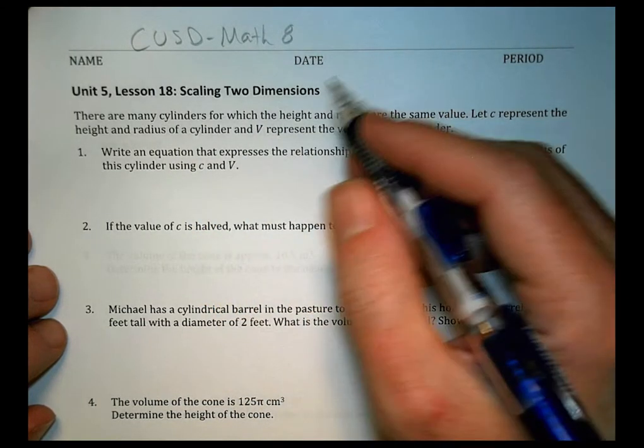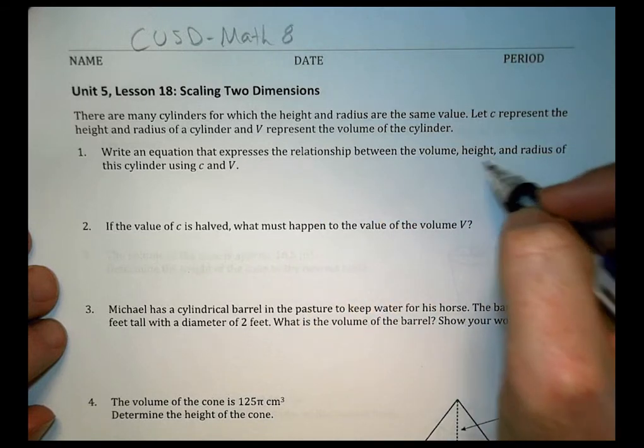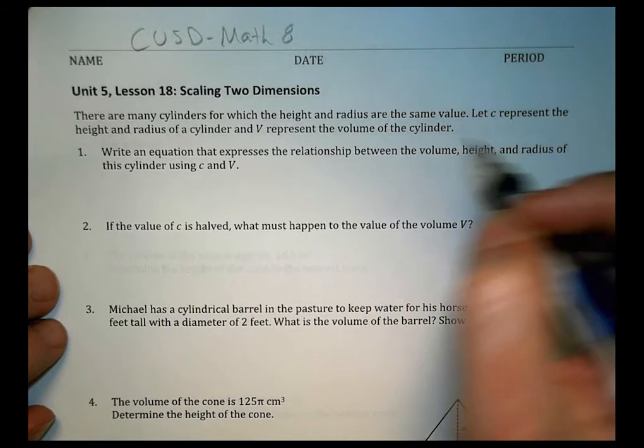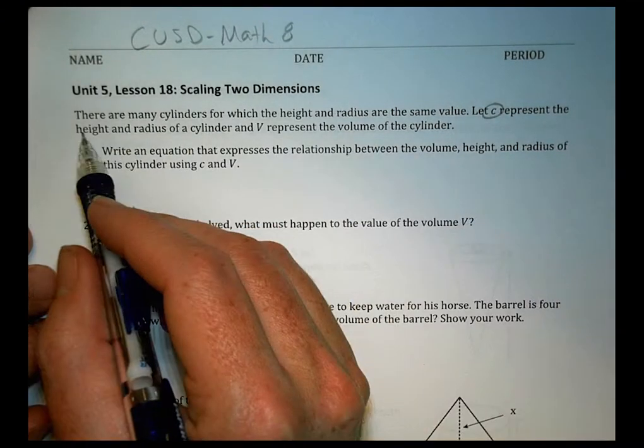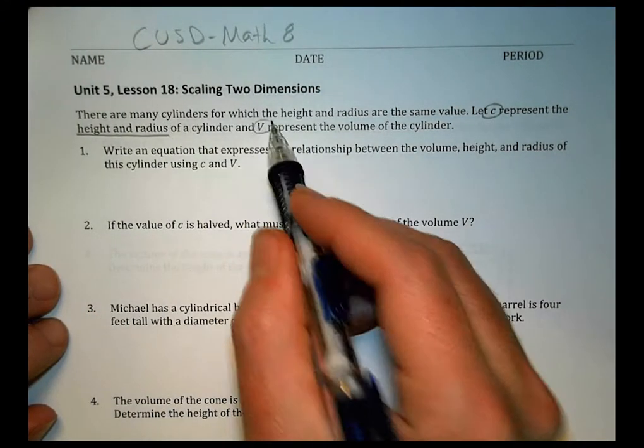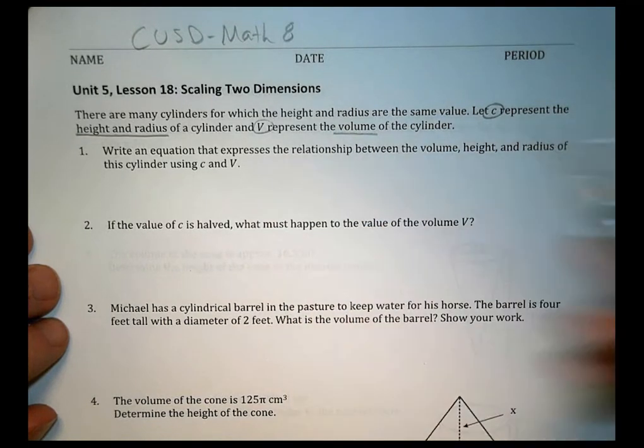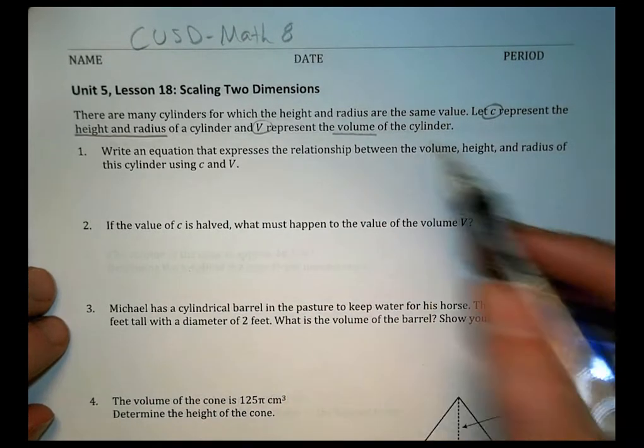So they want you to write an equation that expresses the relationship between the volume, height, and radius of the cylinder using C and V. Read that again, the C part is going to be height and radius, and the V is the volume. Write an equation that works for that there.